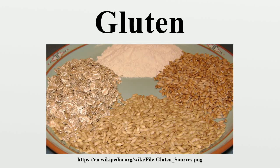In the United Kingdom, only cereals must be labeled for gluten; labeling of other products is voluntary. In the United States, gluten is not listed on labels unless added as a standalone ingredient, and wheat or other allergens are listed after the ingredient line.